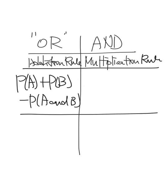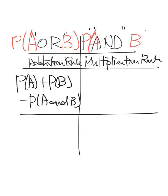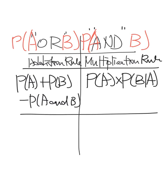Just before, we had the general multiplication rule. For what? AND. So the probability of A and B — I have to say, A and B — which was probability of A times probability of B given A. That was the general multiplication rule for A and B.